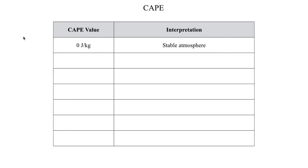A CAPE value of zero means you've got a fully stable atmosphere — air parcels are not going to be rising by their own free will. Right around 250 joules per kilogram is when there's potentially enough energy in the atmosphere to support thunderstorms — just regular run-of-the-mill thunderstorms, maybe some very small hail, maybe some mildly gusty winds, but that's about it.